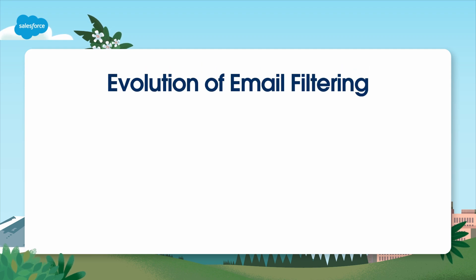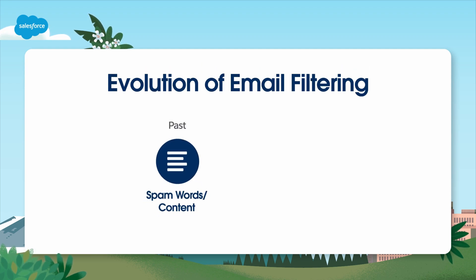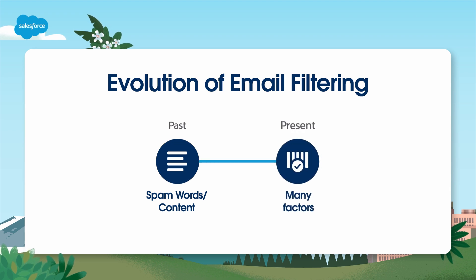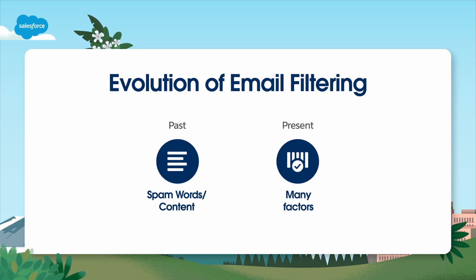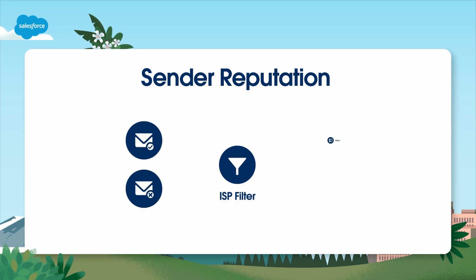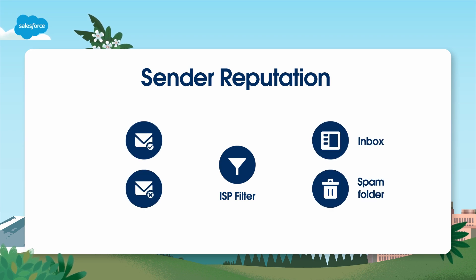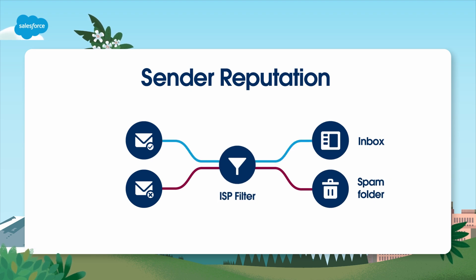Deliverability has evolved over the years. In the past, emails were filtered based mainly on content and spammy words. Today, it's much more advanced. Internet service providers, or ISPs, now look at a lot of factors to decide if an email will make it to the inbox. ISPs look at both elements of the incoming message and the sender reputation to decide whether an email should land in the inbox, spam folder, or be blocked completely.